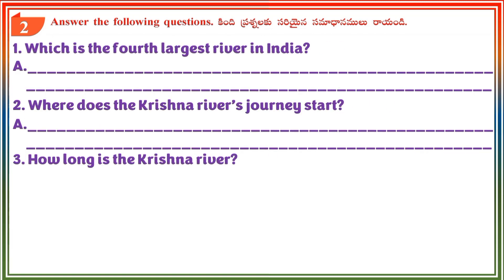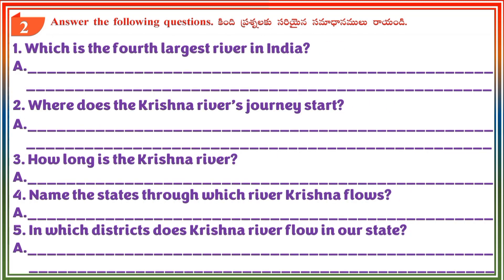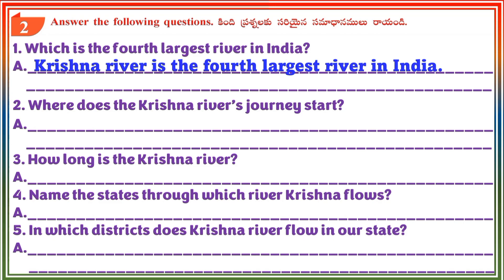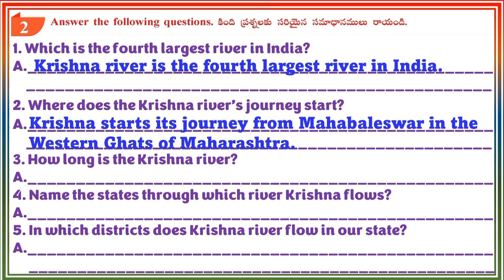Section 2: Answer the following questions. Question 1: Which is the 4th largest river in India? Answer: Krishna River is the 4th largest river in India. Question 2: Where does the Krishna River's journey start? Answer: Krishna starts its journey from Mahabaleswar in the Western Ghats of Maharashtra. Question 3: How long is the Krishna River? Answer: Krishna River is almost 1400 km long.